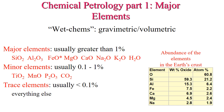Major and minor elements are usually going to be expressed as weight percent oxides, or grams of oxide per 100 grams of sample. A trace element will be expressed as parts per million concentration, which means we're looking at how many atoms are present out of 1 million atoms in the total system. The relationship between weight percent oxide and parts per million is roughly 10,000 parts per million for one weight percent oxide.